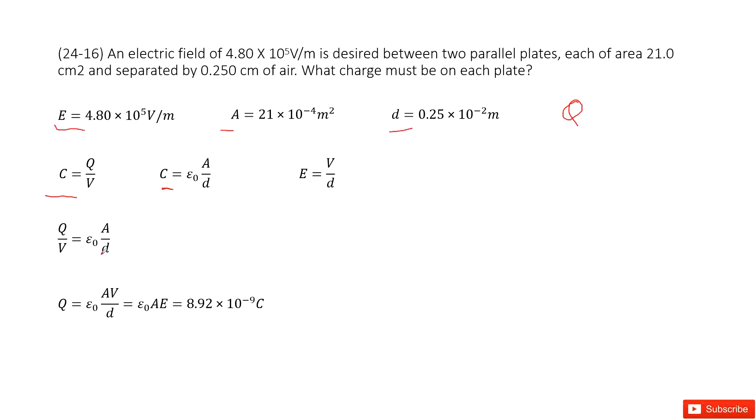So they are equal. Then we can convert this equation to get the function for charge Q. Charge Q equals epsilon naught times A times V over d.